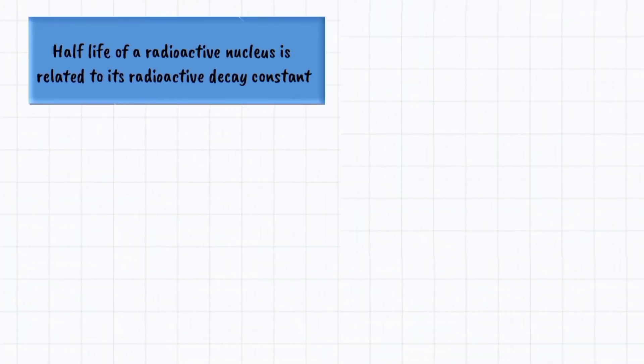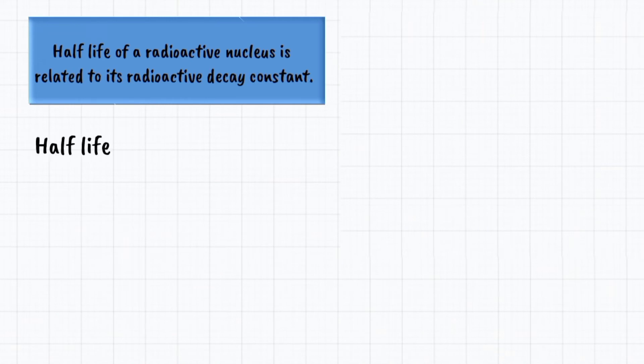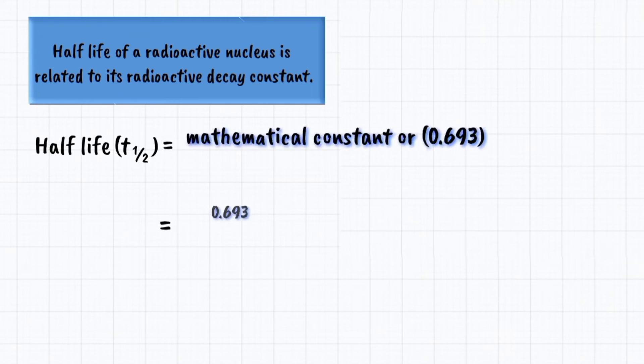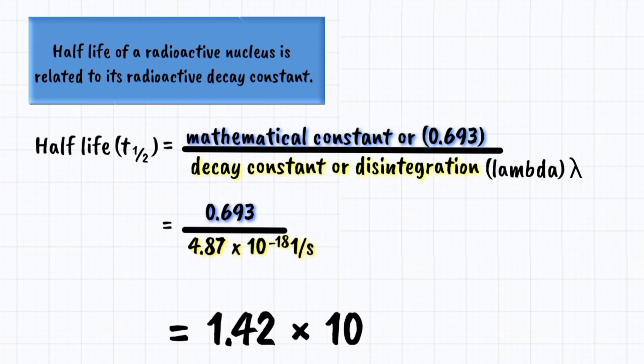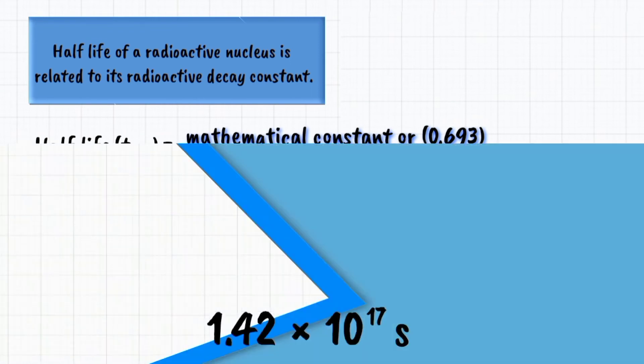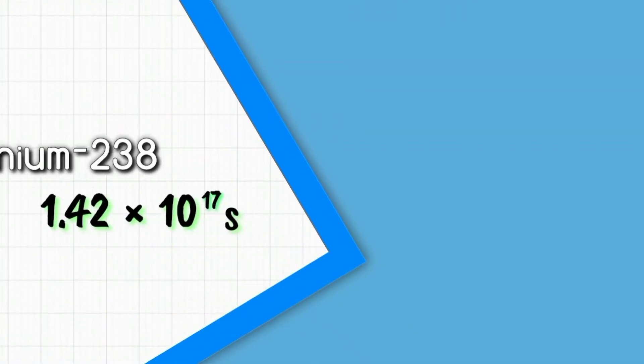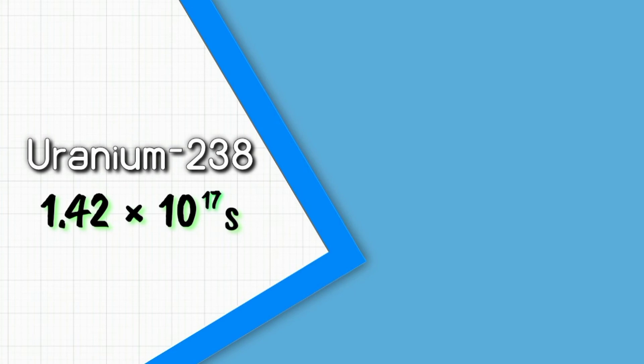The half-life of a radioactive nucleus is related to its radioactive decay constant by half-life equals natural logarithm of 2, which is 0.693, divided by the decay constant of uranium-238, which is 4.87 times 10 to the negative 18th power per second. So, 1.42 times 10 to the 17th power seconds is the half-life of uranium-238 in seconds.